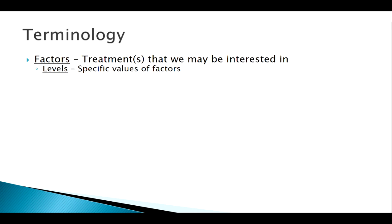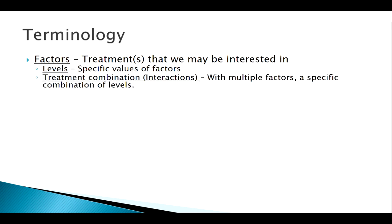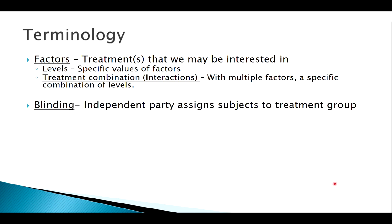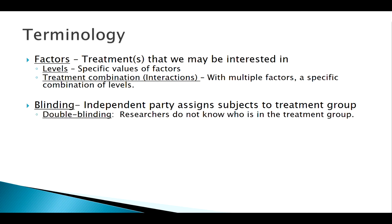If we have multiple factors, the different levels create interactions or treatment combinations. Since we don't want individuals in the control group to know they're in the control group, we use the practice of blinding. A blind study is one where the participants don't know whether they're receiving the treatment or not. A double-blind study is when both the researchers and the participants don't know who's in what group. That's where a placebo comes in.